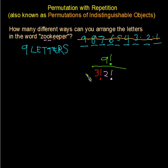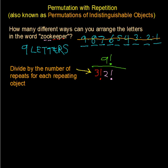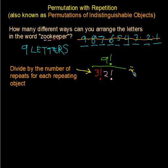Let me make a note here so you can write this down. We divide by the number of repeats for each repeating object. If we had other repeating objects, we would divide by those as well. Whatever the result is, that will be the number of different ways we can arrange the letters in the word ZOOKEEPER.